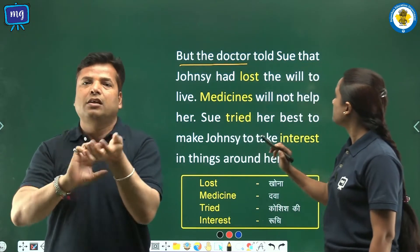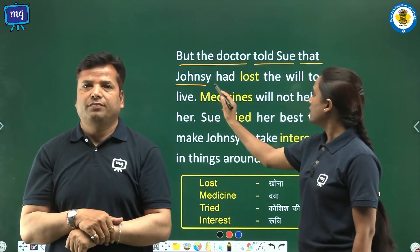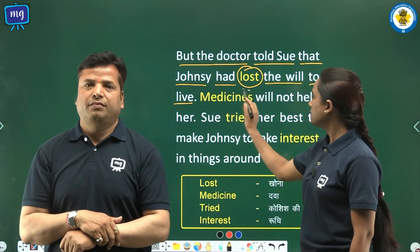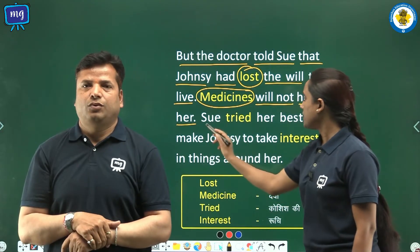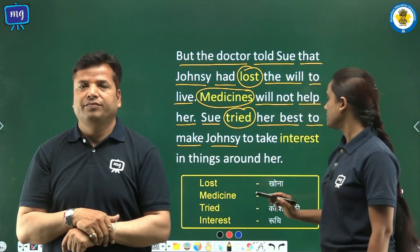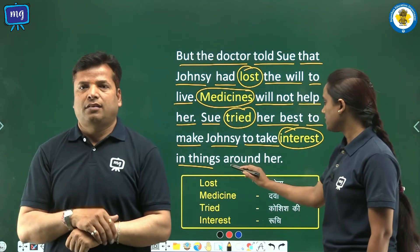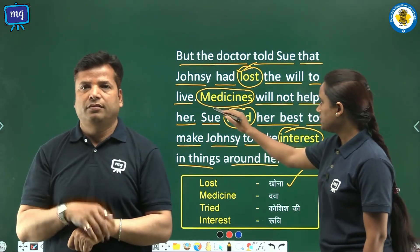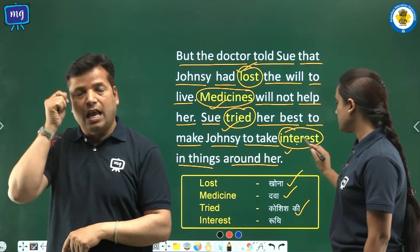But the doctor told Sue that Johnsy had lost the will to live. Medicines would not help her. Sue tried her best to make Johnsy take interest in things around her. Word meanings: lost — khona, medicine — dava, tried — koshish ki, interest — ruchi.